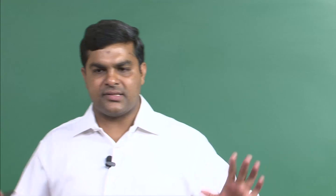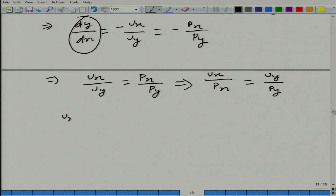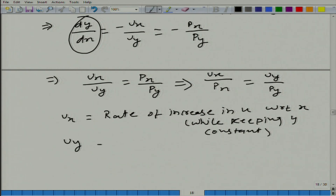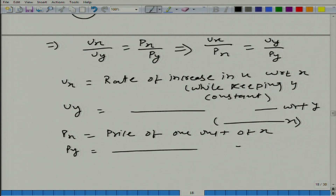Let me justify it. Forget about the calculus — just remember these simple things: u_x is nothing but the rate of increase in u with respect to x while keeping y constant. Similarly, u_y is the rate of increase in u with respect to y while keeping x constant. And p_x is the price of 1 unit of x, and p_y is the price of 1 unit of y.